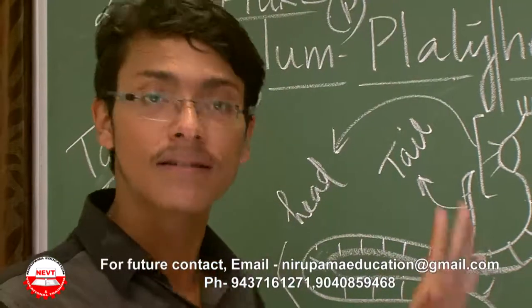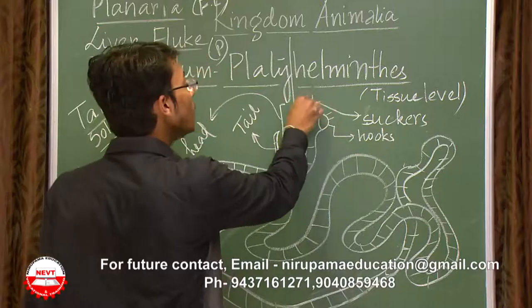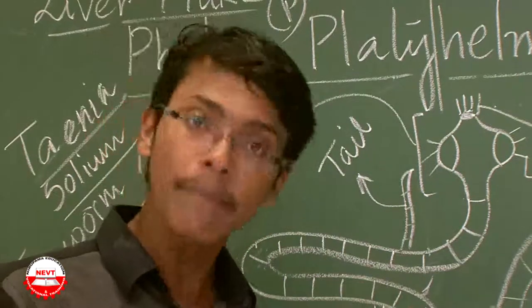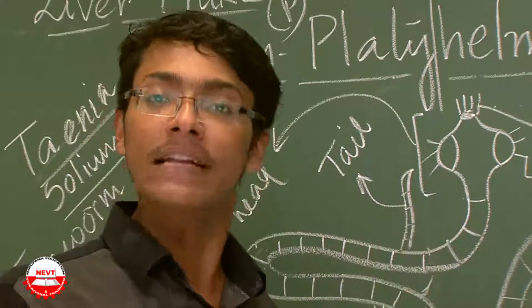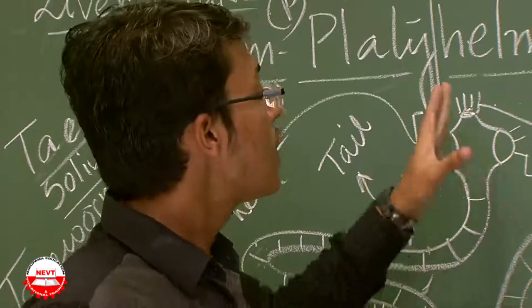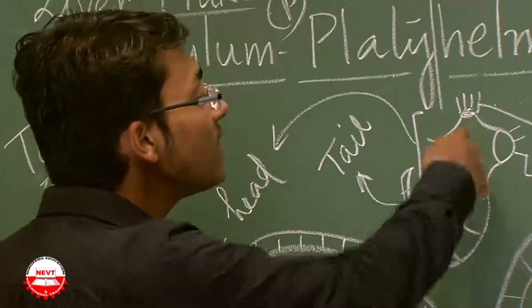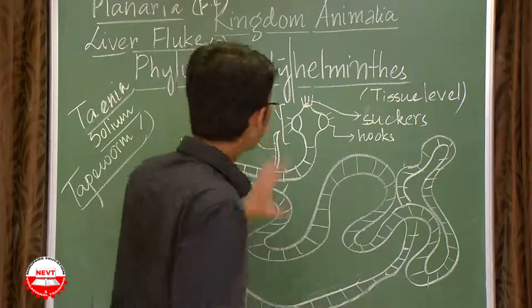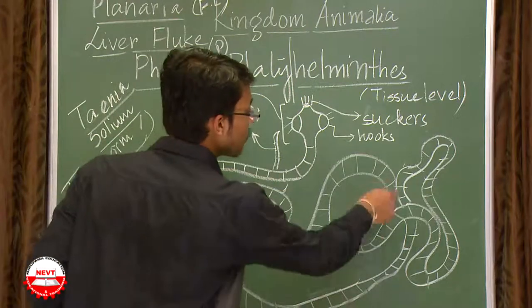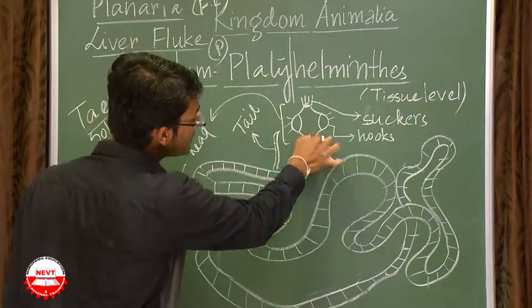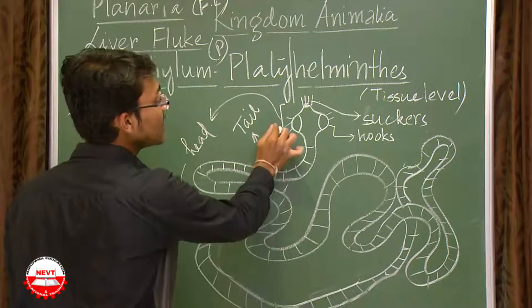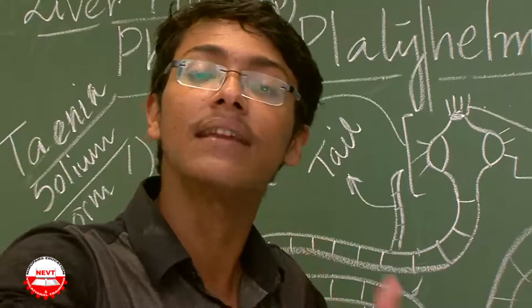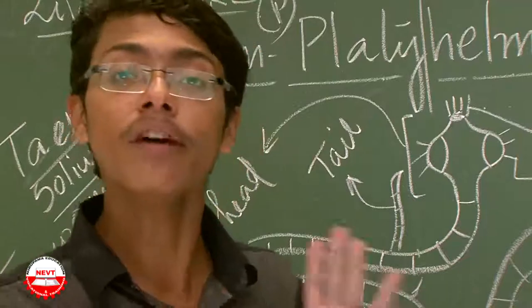Taenia solium has a sucker on its mouth that helps it attach to the intestinal wall. It mainly stays in the intestine and then affects the liver and other organs. It also has hooks to assist in anchoring. The body is narrow at the head, broadens in the middle, then narrows again at the tail — it is dorsoventrally flattened and can stay in a coiled form inside the intestine. This makes Taenia solium a very important representative of Platyhelminthes.